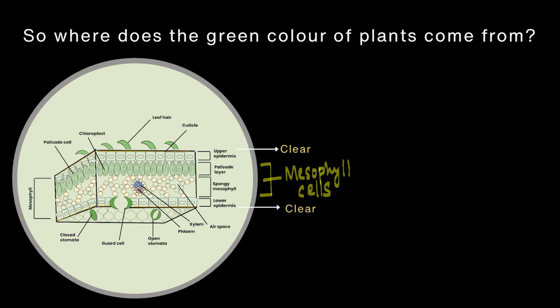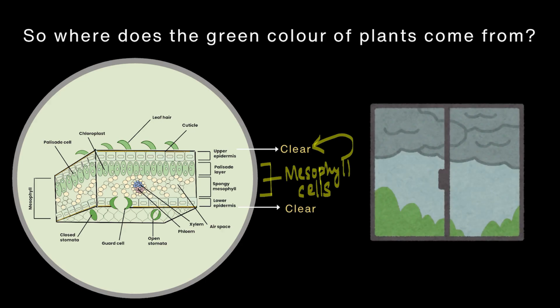So, the green colour that we see in plants is actually the mesophyll cells shining through the clear epidermis. It is somewhat like enjoying a rainy day through a clear glass window.